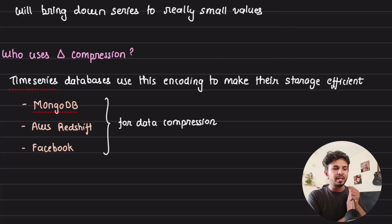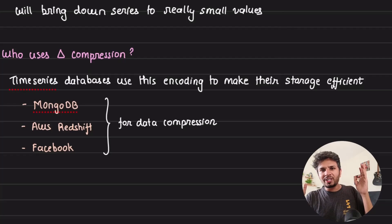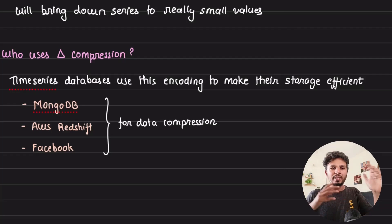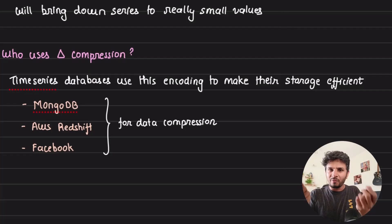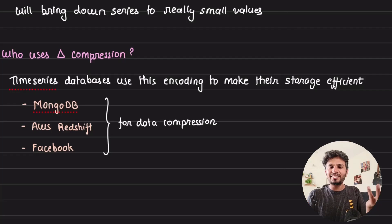There are many more algorithms like this, but delta encoding is the easiest high-value solution in most cases. That's all I wanted to cover as part of this database fundamentals series. I hope you found it interesting — I'll see you in the next one.